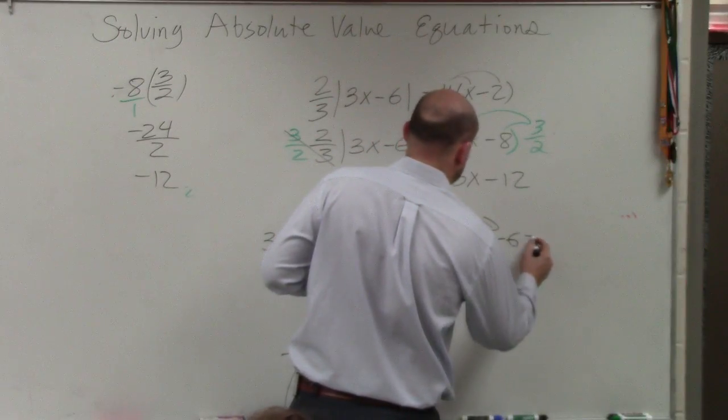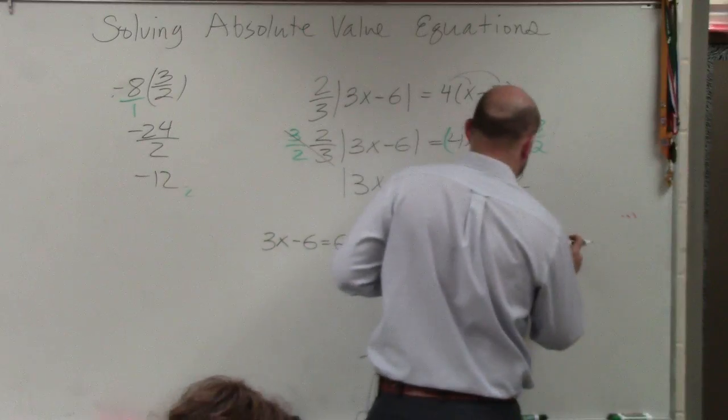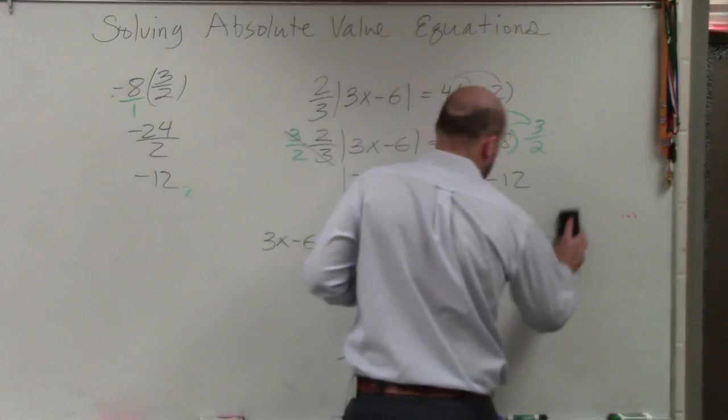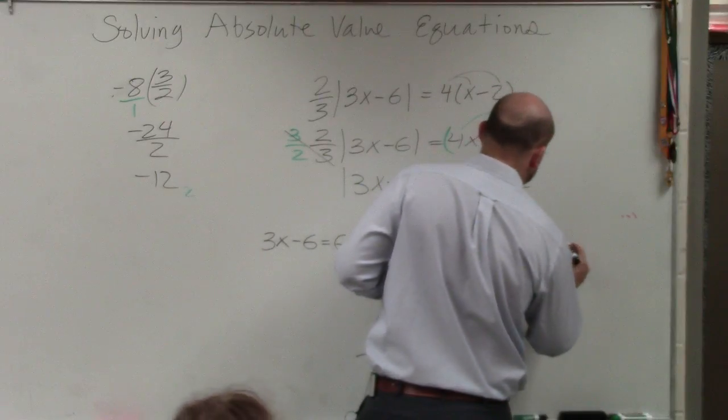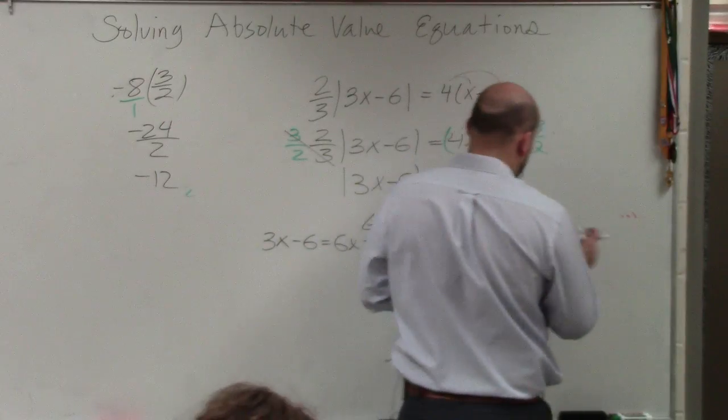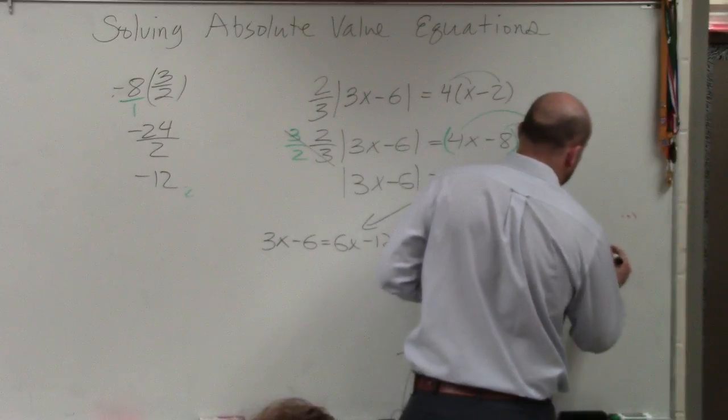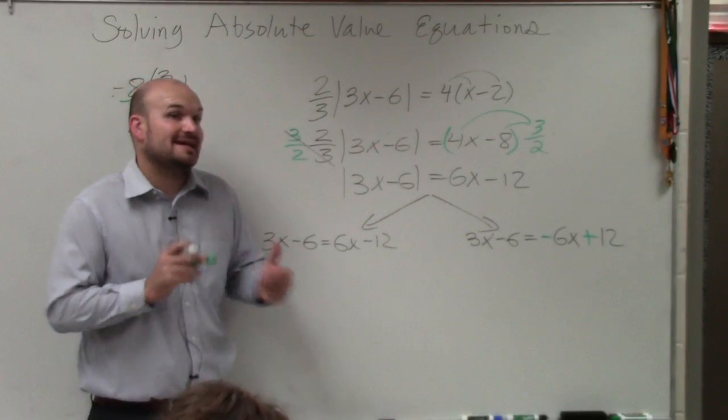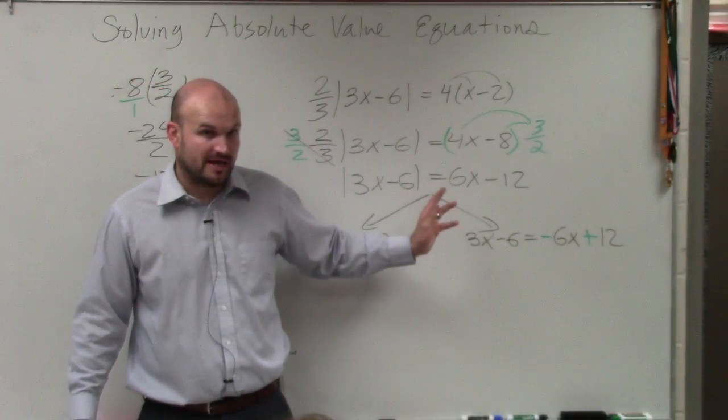3x minus 6 equals negative 6x. Oops, now I want that to be regular. So yeah, but you've got to make sure you change the signs of both of them. What students forget is they just changed the sign of one of them. So that's why I'll put them in green to make sure, hey, make sure you negate both of them. OK?